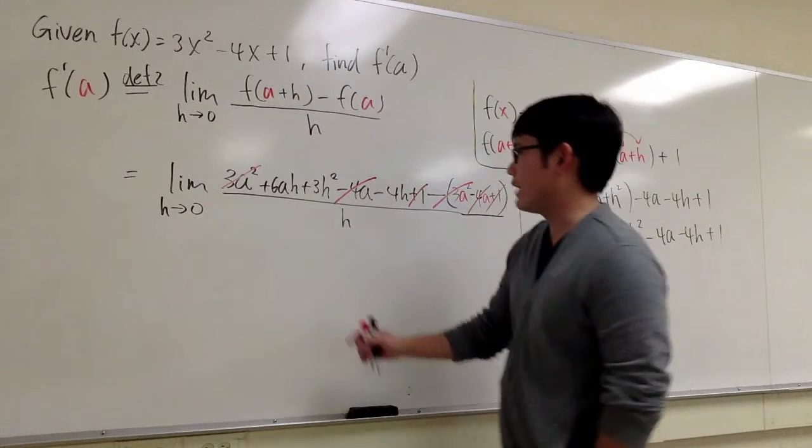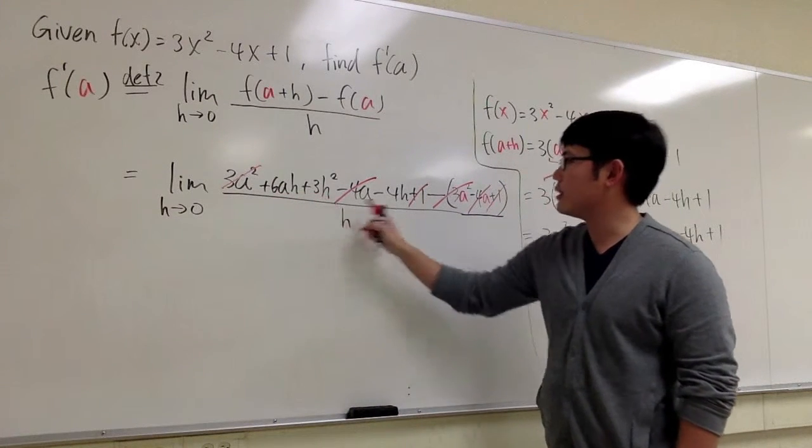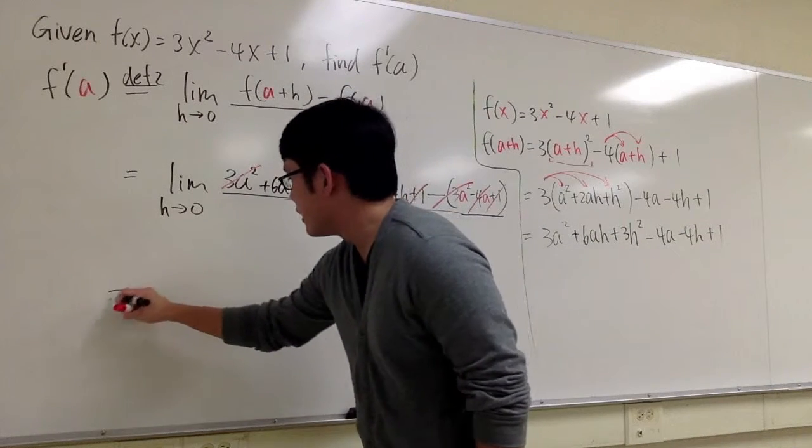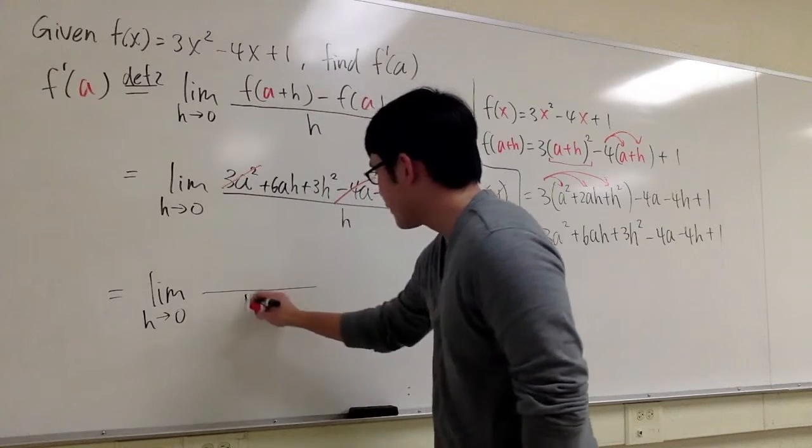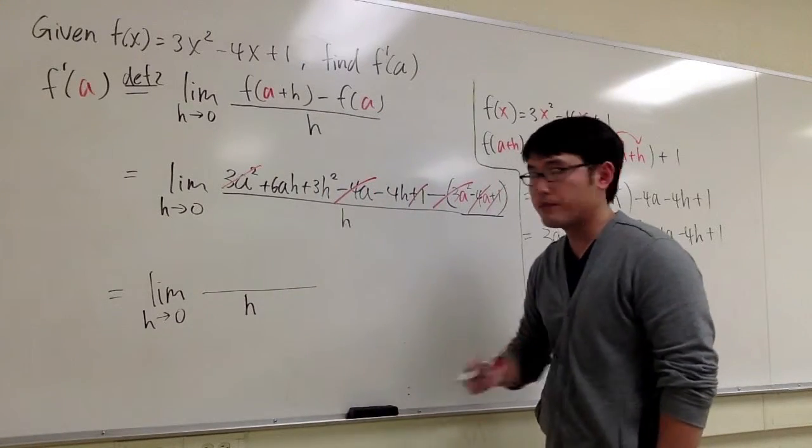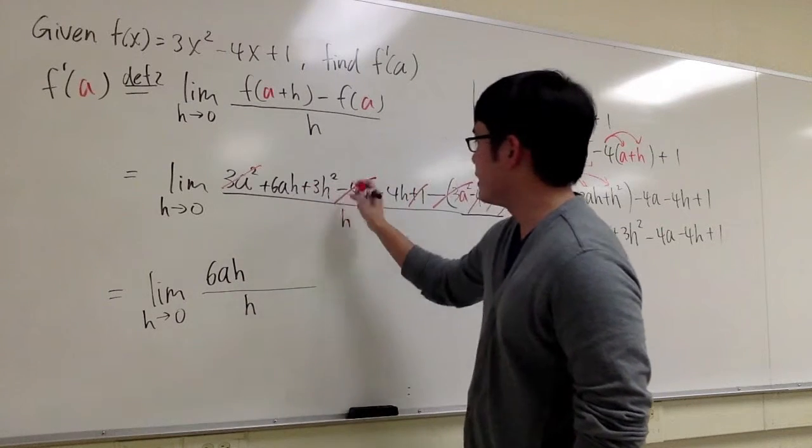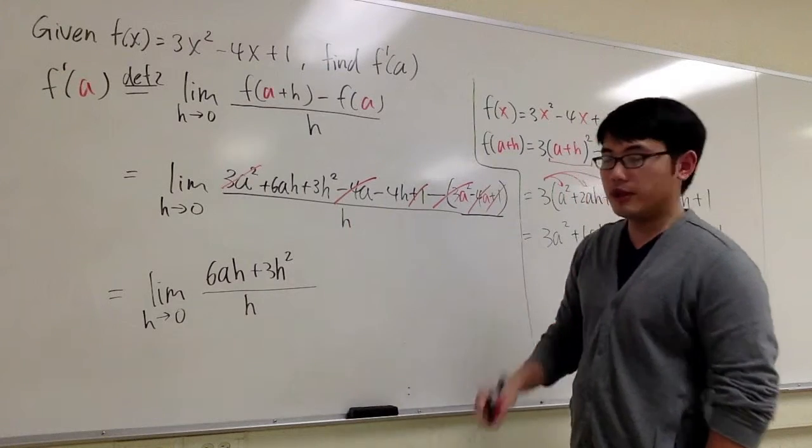And let's see what we have left. 6ah + 3h² - 4h on the top. And let me write that down. Again, just to be more clear, I would say on the bottom still have the h. On the top, I have the 6ah + 3h² and then - 4h.